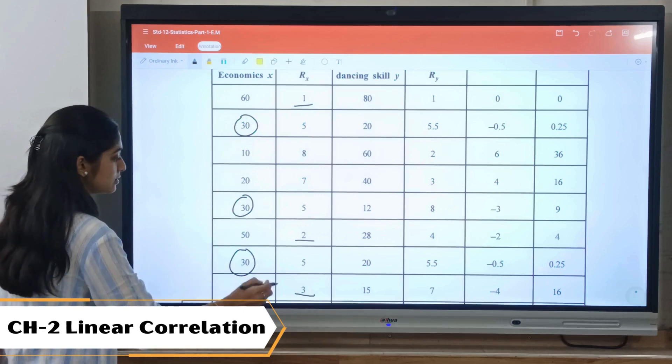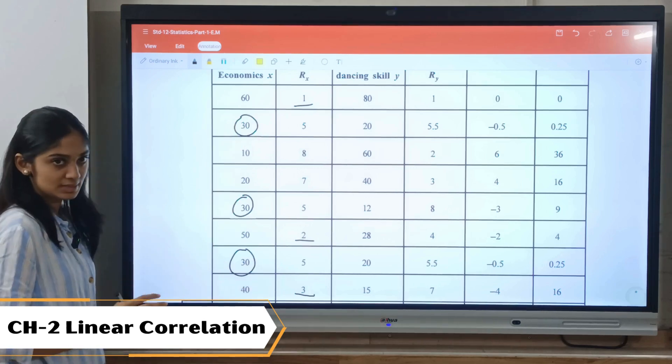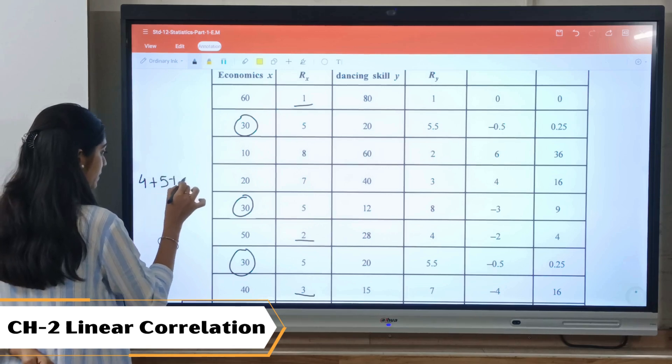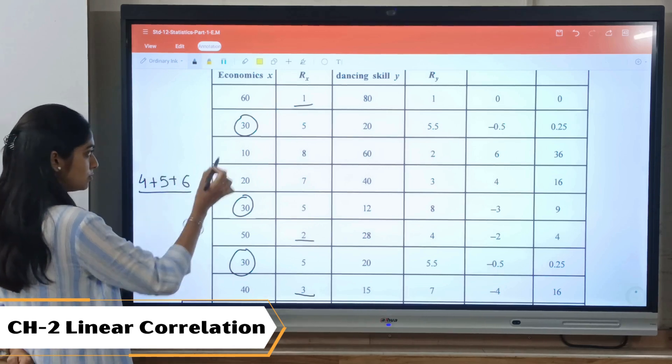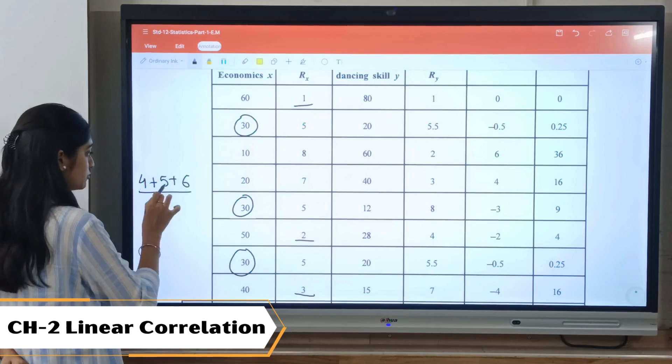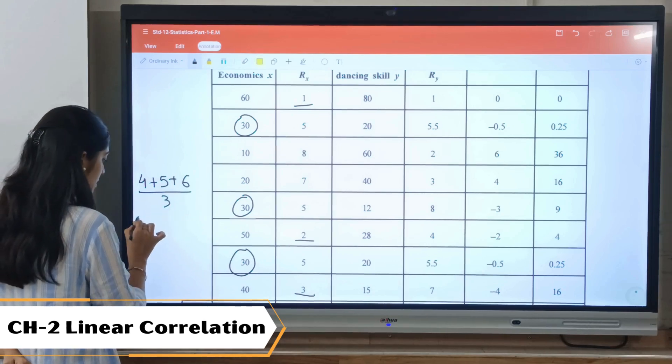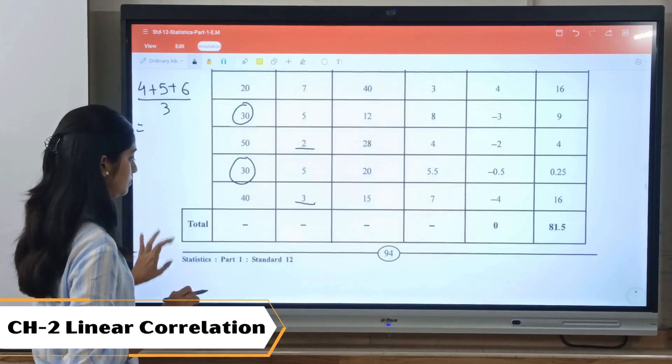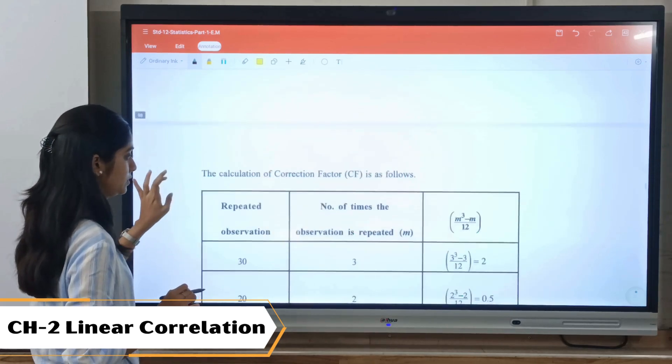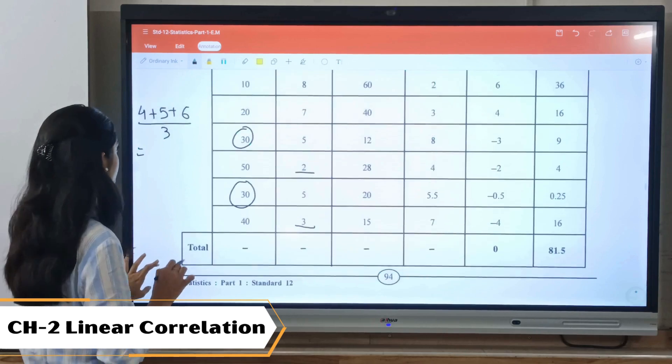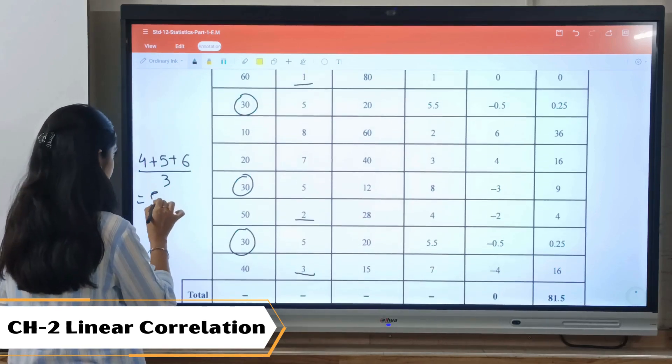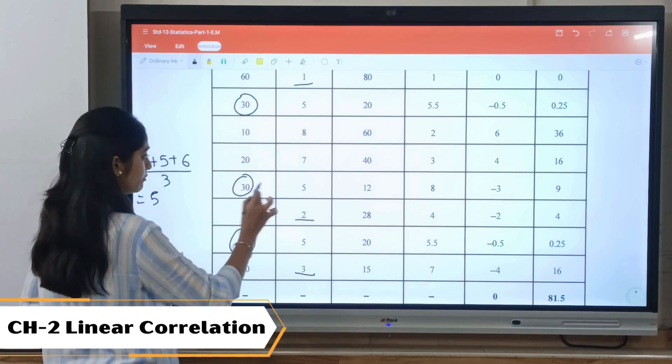Now first, second, third rank is already assigned. Now four plus five plus six - these three ranks are to be distributed among three. So four plus five plus six divided by three, if we find out the answer, the answer is five. So 30 will be given rank five.